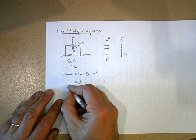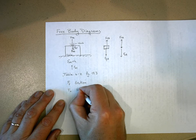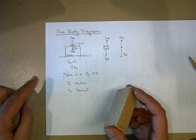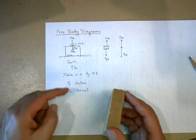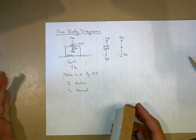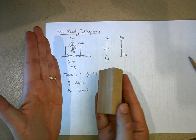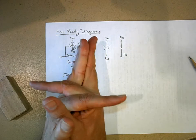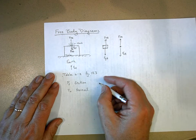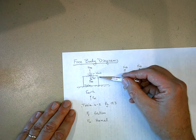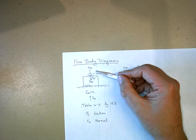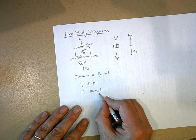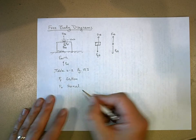Then we have what we call normal forces — F sub N. This one is hard for students to get. Friction is the interaction between two surfaces parallel to the surface. The normal force is the force between two surfaces that's perpendicular to the surface. If I take my two hands and press them together, the normal force is perpendicular to those two surfaces. The force of the table on the block is the normal force. The reason it's called the normal force is that in mathematics, the word 'normal' means perpendicular.